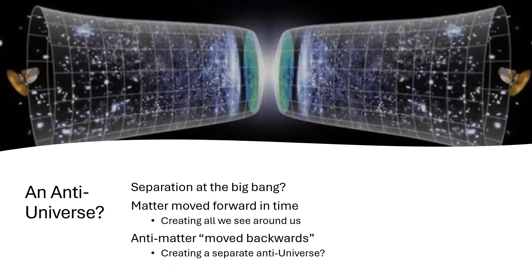It's been suggested — and I dreamt this one up independently, I was quite taken by the idea when I saw that other people had beaten me to it — that perhaps we live in a universe of matter, and that the Big Bang created roughly equal amounts of matter and antimatter, and that the antimatter separated and went off in the other time direction — backwards in time, 'before' the Big Bang, moving in the negative time axis — and that the matter moved in the positive time axis away. We've still got to explain why we've got a billion times more photons than matter particles, so this doesn't necessarily answer all the questions, but it's a nice idea.